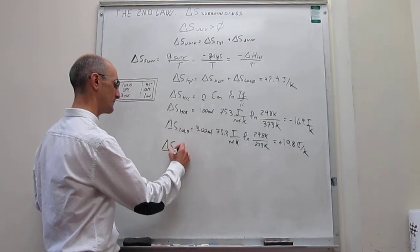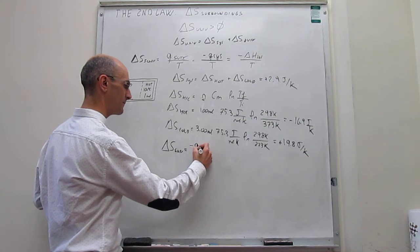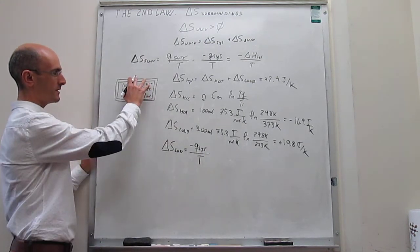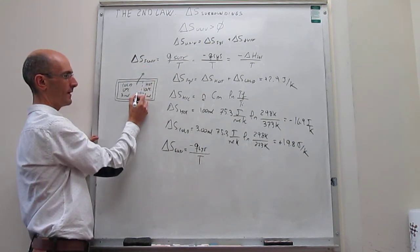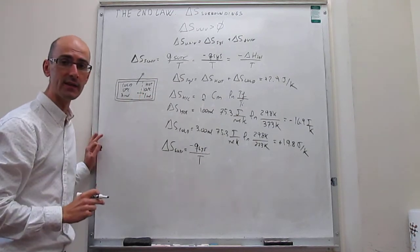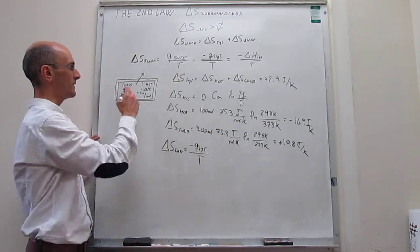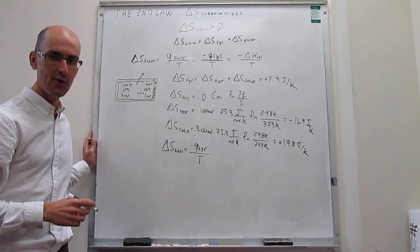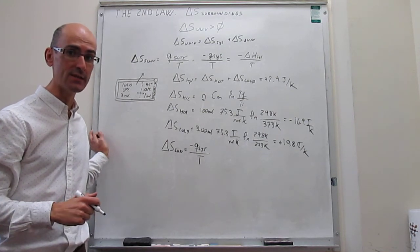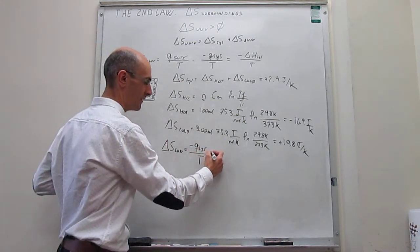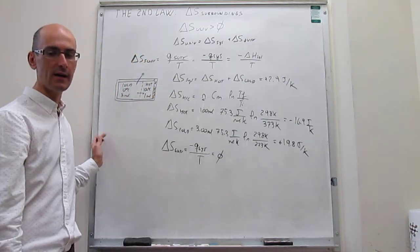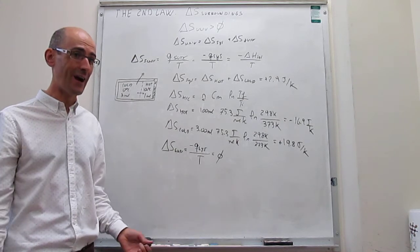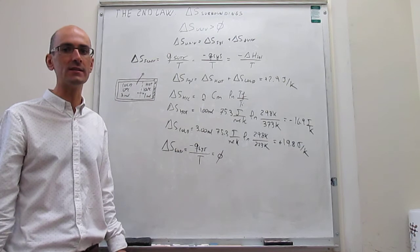The change in entropy in the surroundings equals −q_system / T. But notice that in this case, we are interested in energy transfer between the system and the surroundings, not between the two subsystems. Because the container walls are adiabatic, there is no energy transfer at all between the system and the surroundings. Therefore, q_surroundings = 0, and ΔS_surroundings = 0 — the surroundings do not notice anything happening inside the system.